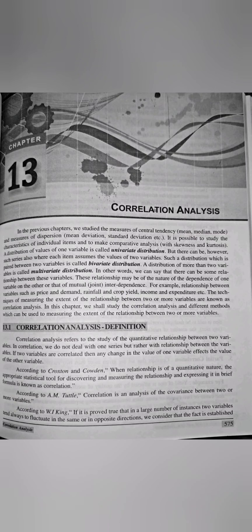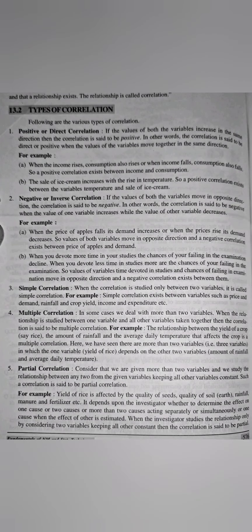In this theory, first he has explained that distributions or series are of three types: univariate, bivariate and multivariate. Then the definition of Correlation according to different scientists. Then what are the different types of Correlation — this is important. The types are: positive correlation, negative correlation, simple, multiple, partial correlation, total, linear and non-linear.